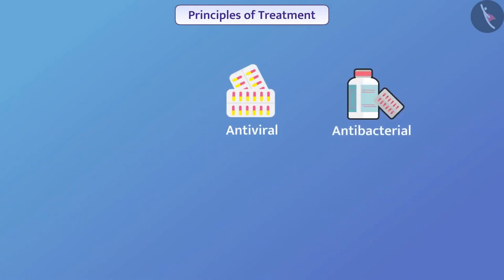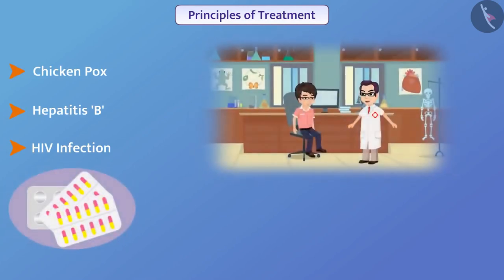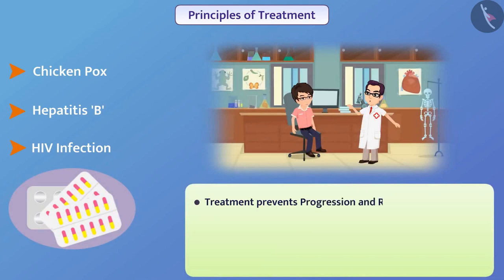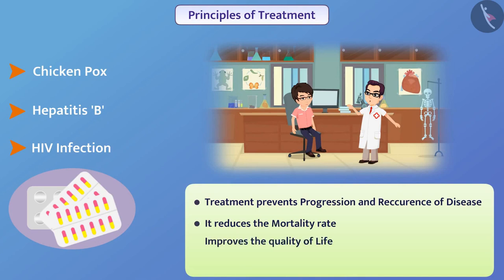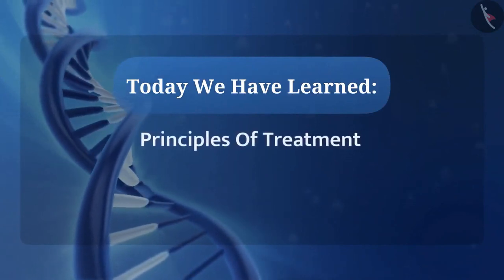Despite this, medicines to control chickenpox, hepatitis B, and HIV infection have been manufactured. Treatment prevents the progression and recurrence of disease, reduces the mortality rate, and improves the quality of life. However, we should take medicines as per a doctor's advice and avoid self-medication. Today we have learnt about the principle of treatment.